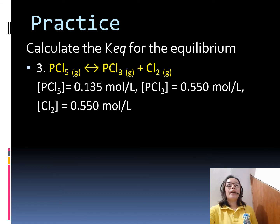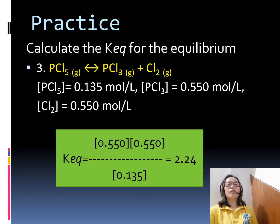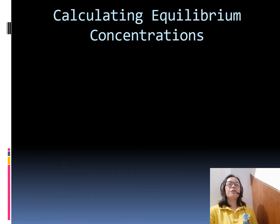For the decomposition of phosphorus pentachloride yielding phosphorus trichloride and chlorine, given the concentration of each reactant and product, we find Keq using the same method — product concentration over reactant concentration — and that is how to compute for Keq.